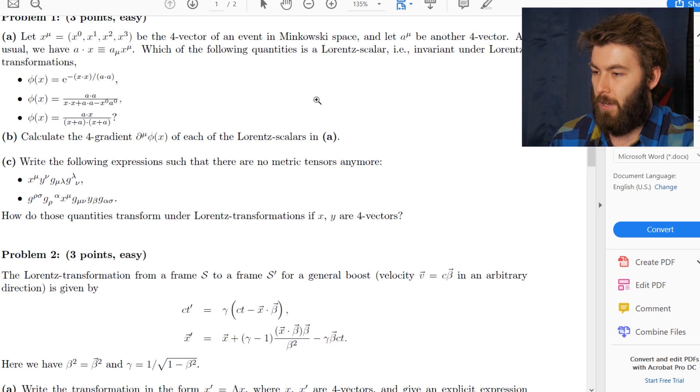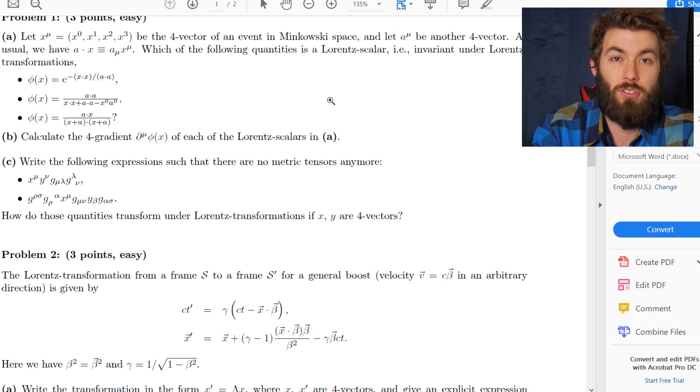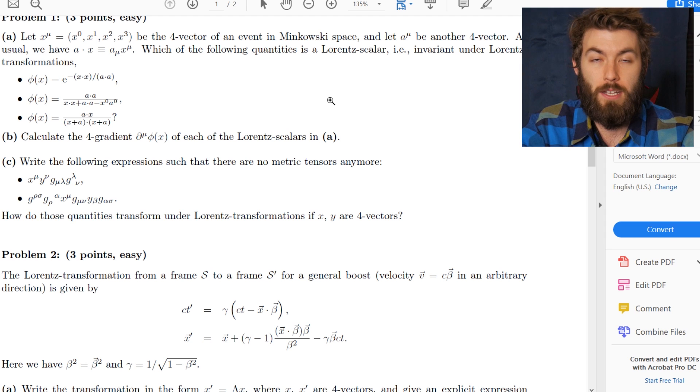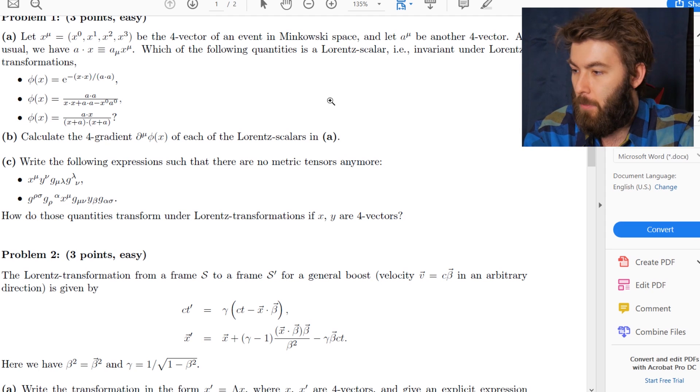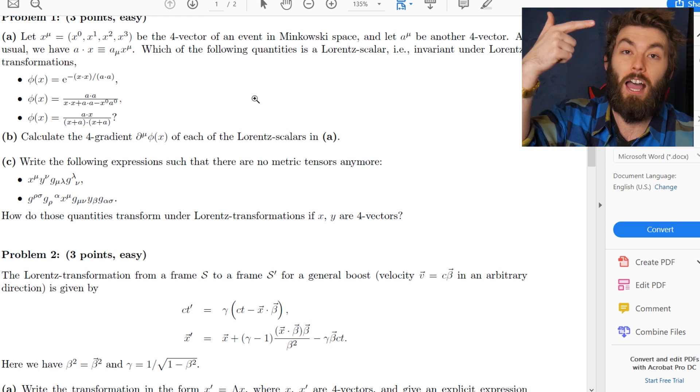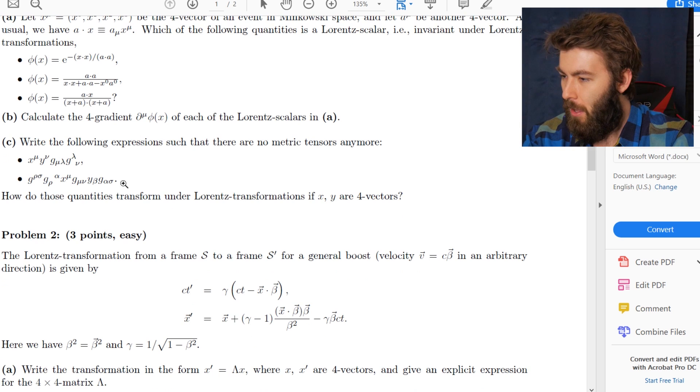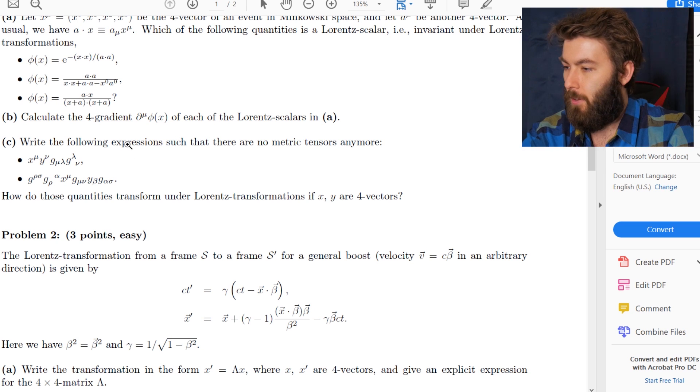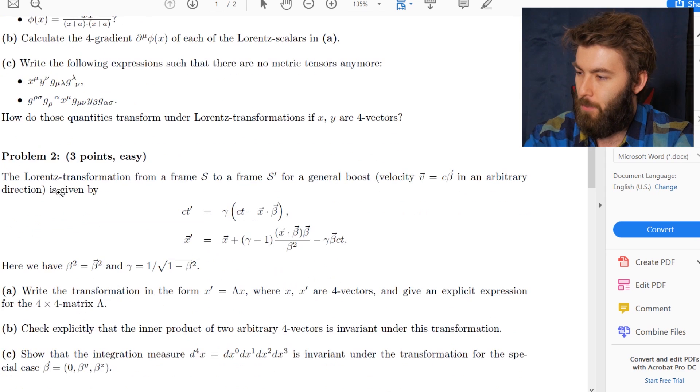Calculate the four gradient of the Lorentz scalars. That's just a generalization of the gradient that you know and love from multivariable calculus, except instead of three vectors x, y, and z, you have your x, y, and z and time component as well. Write the following expression such that there is no metric tensor anymore. That's pretty easy.